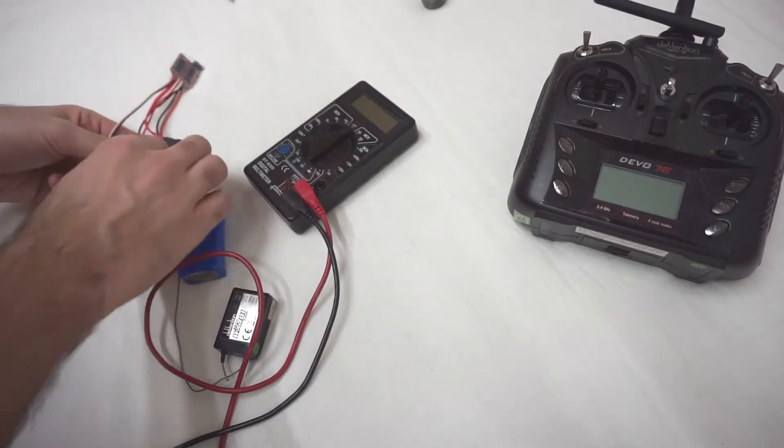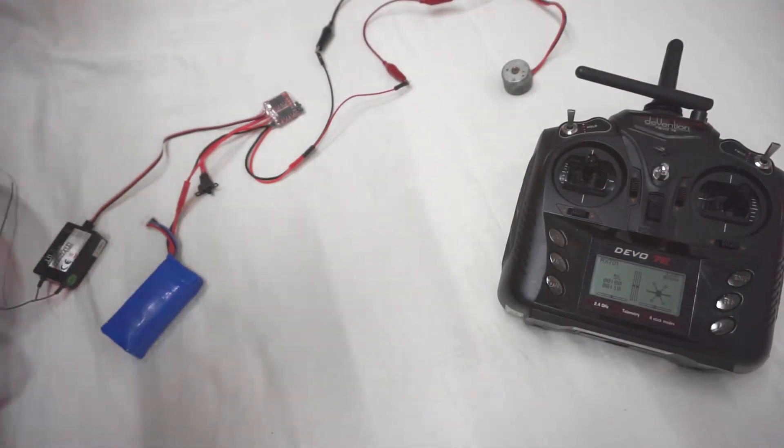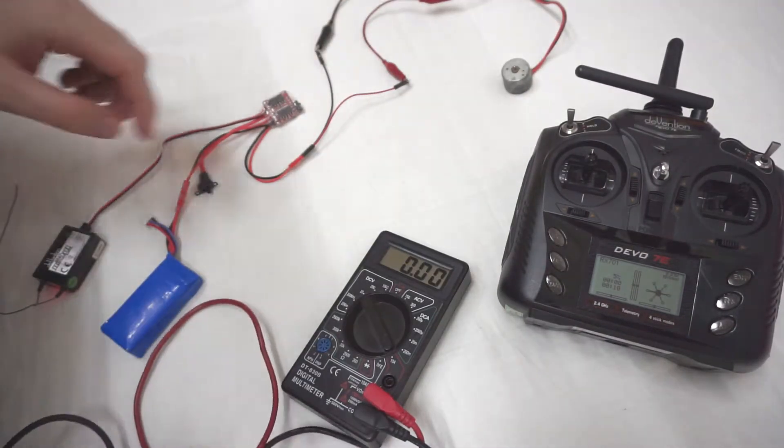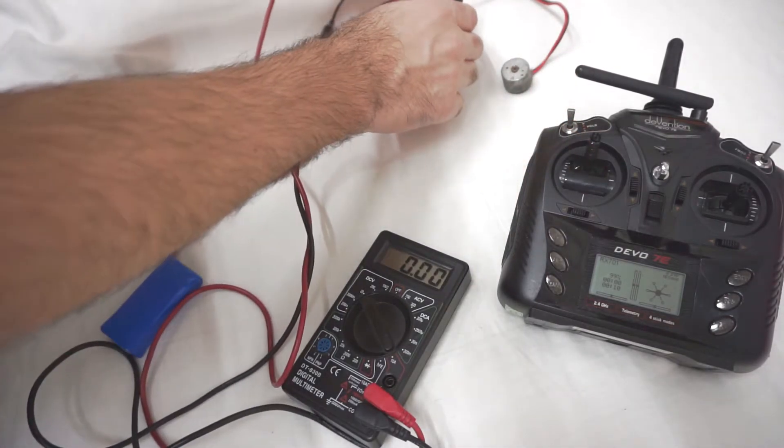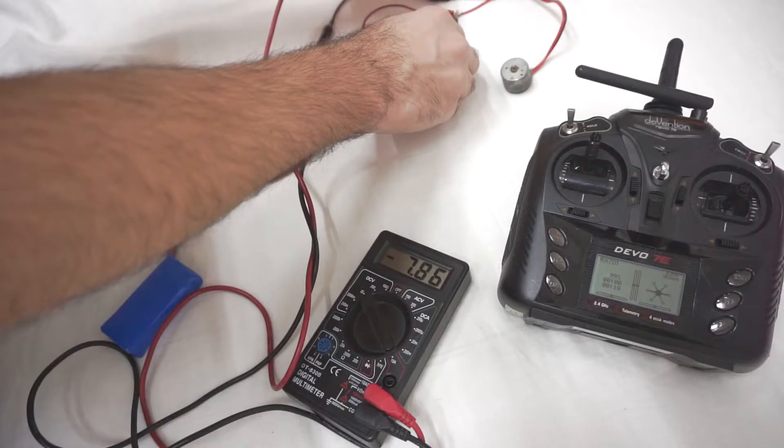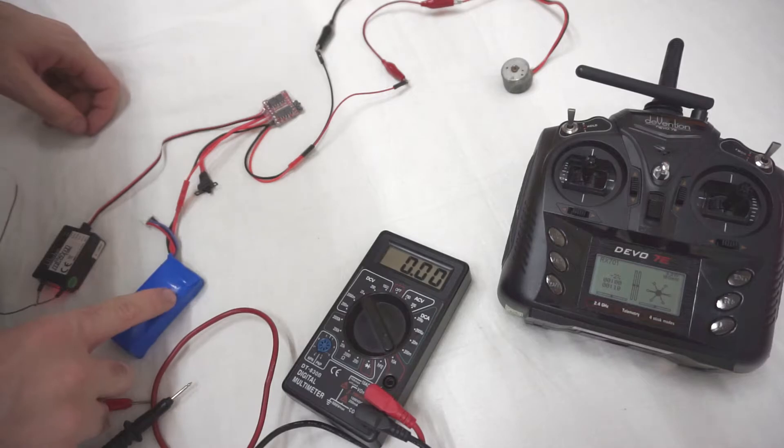So it won't damage the receiver. I'm going to measure the voltage here at the motor. So that's the maximum speed. 7.8V. So that's the maximum speed from the battery.